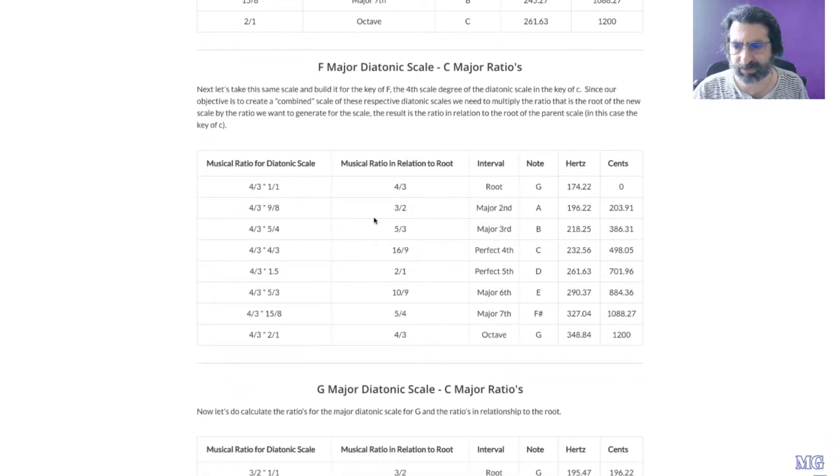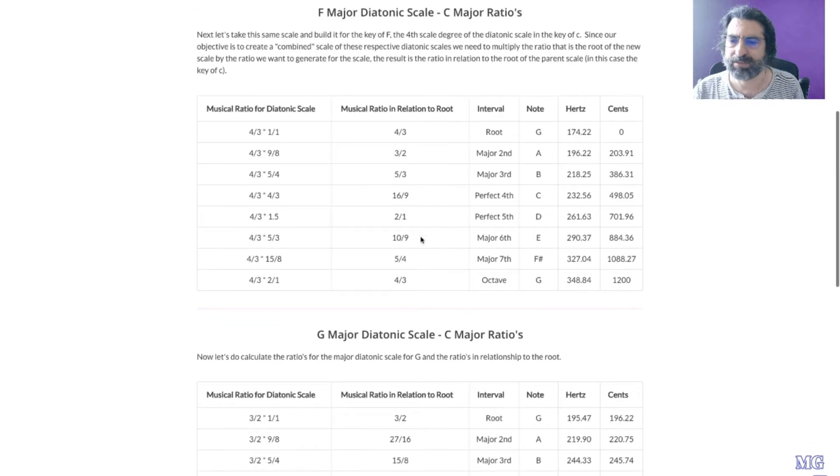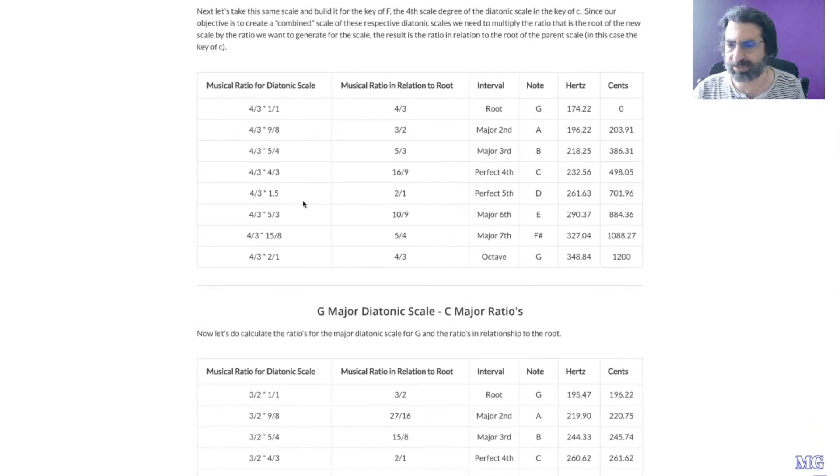And so we'll see 4 over 3, 3 over 2, 5 over 3. A couple new notes, 16 over 9 and 10 over 9, are different pitches from what was in the diatonic scale. So this is an example of why you have equal temperament, right?